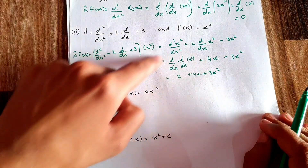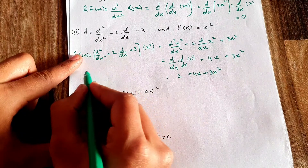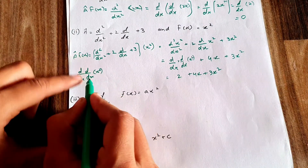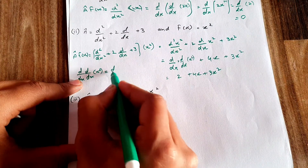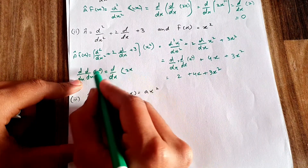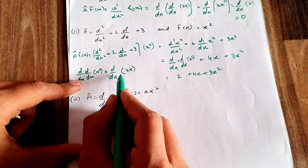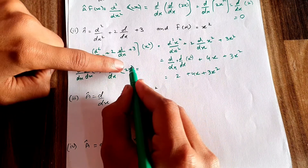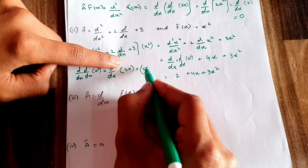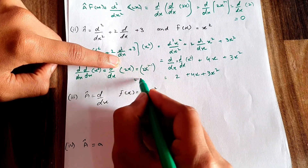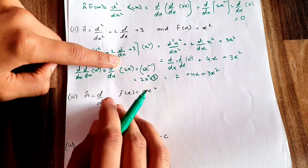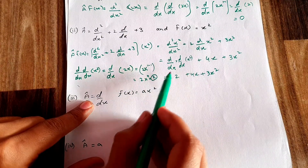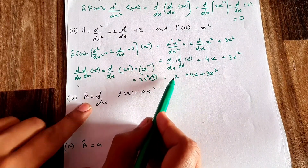To justify: (d/dx)·(d/dx)·x² — the first derivative gives d/dx(2x), and applying the power rule again: 2·x^(1−1) = 2·x⁰ = 2. This confirms that the double derivative of x² equals 2.